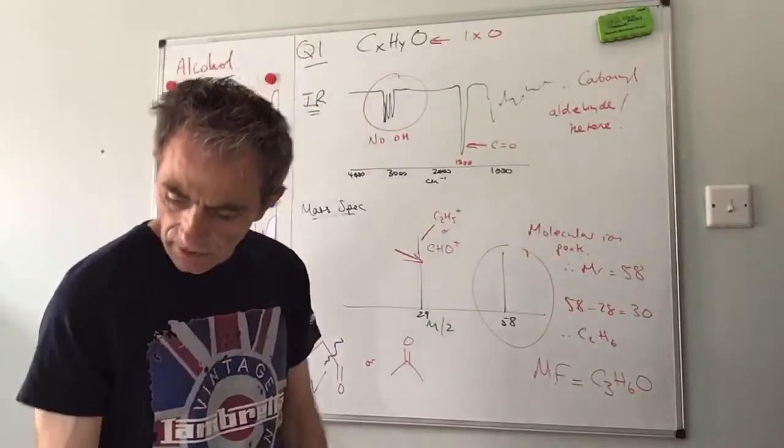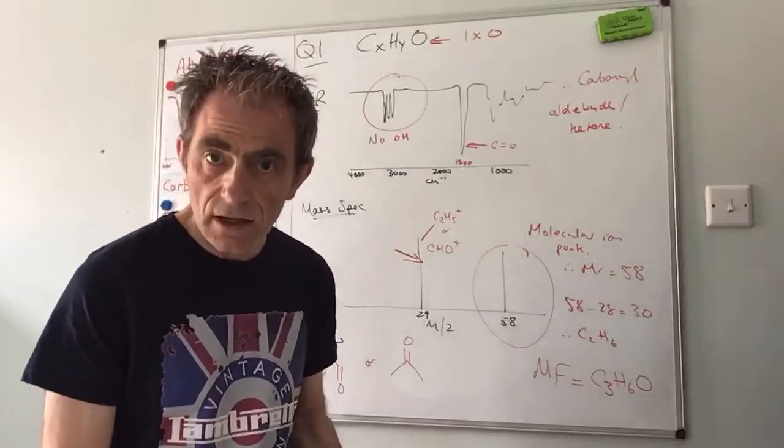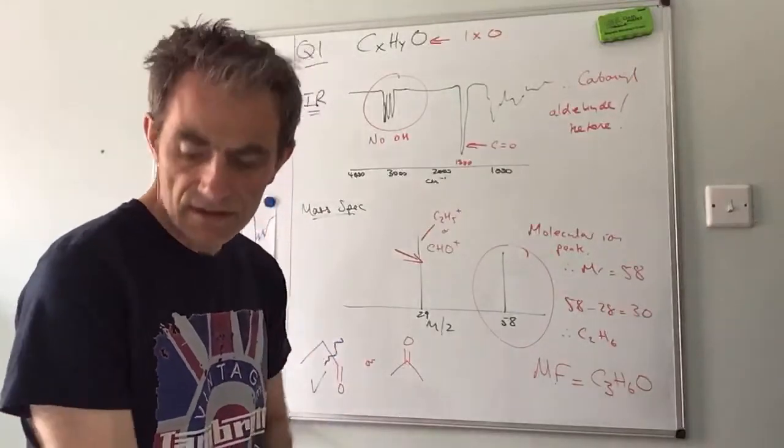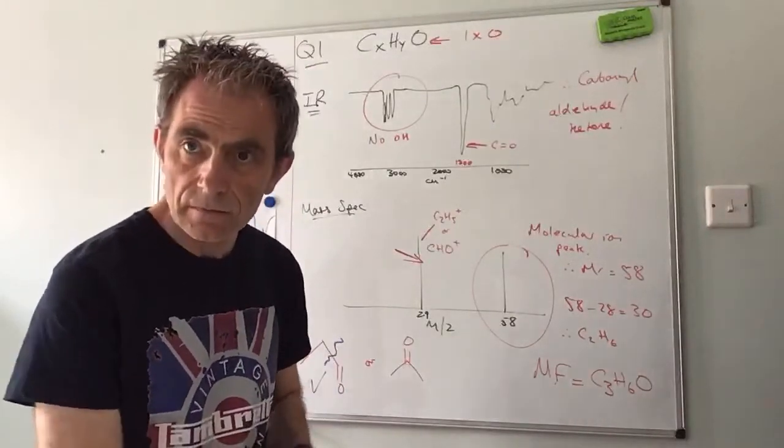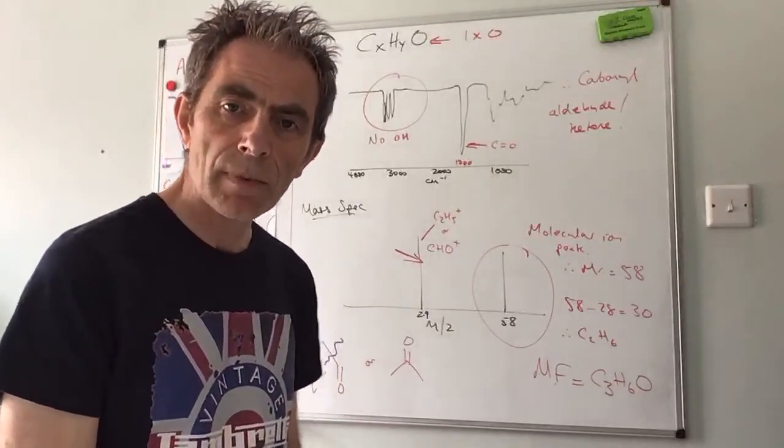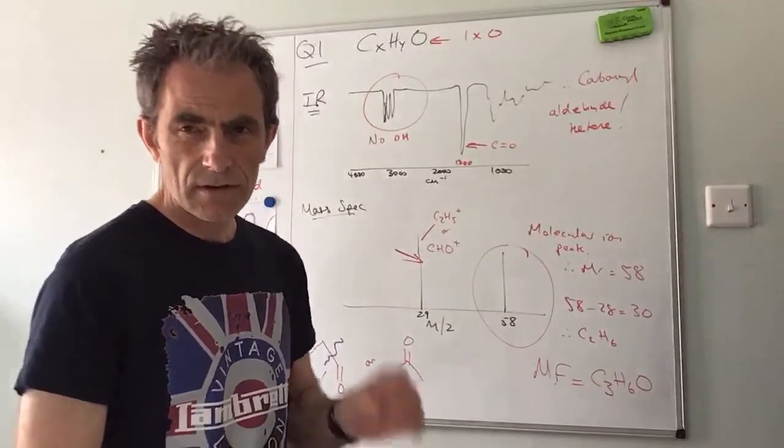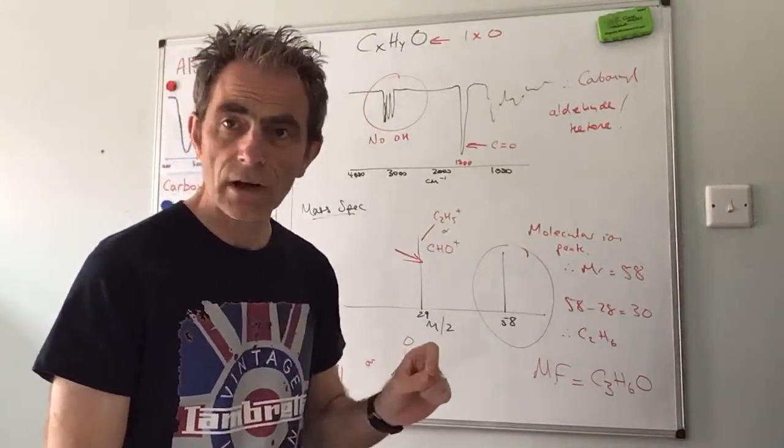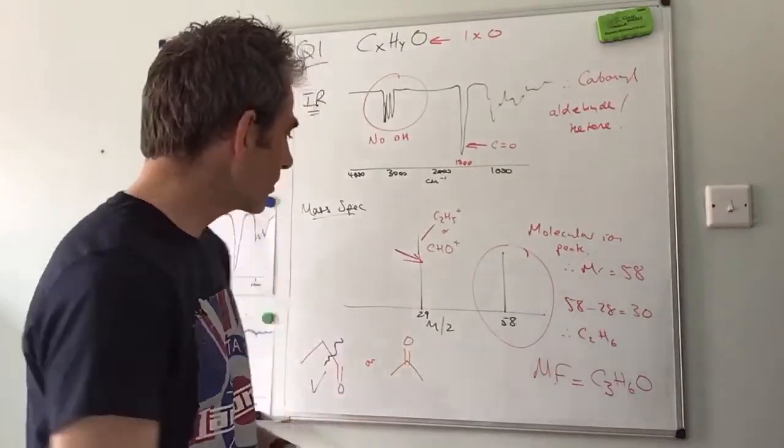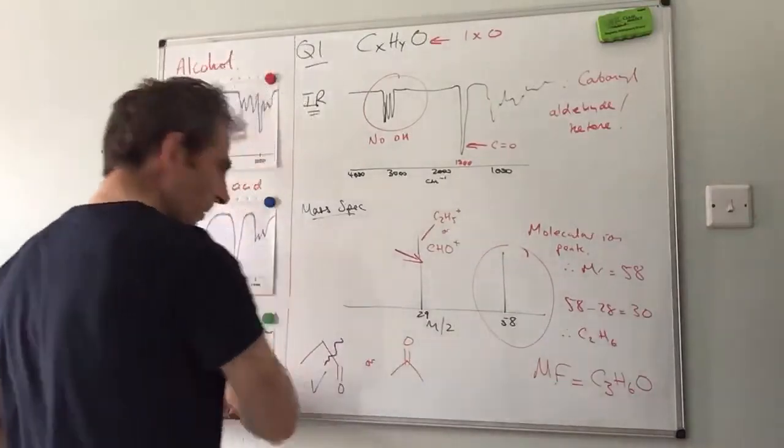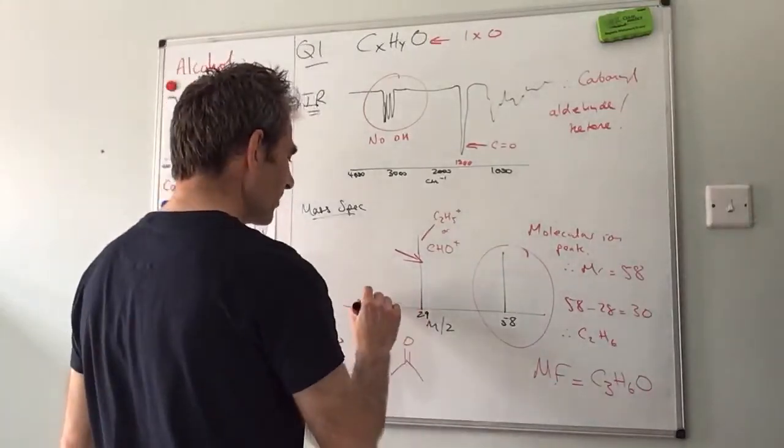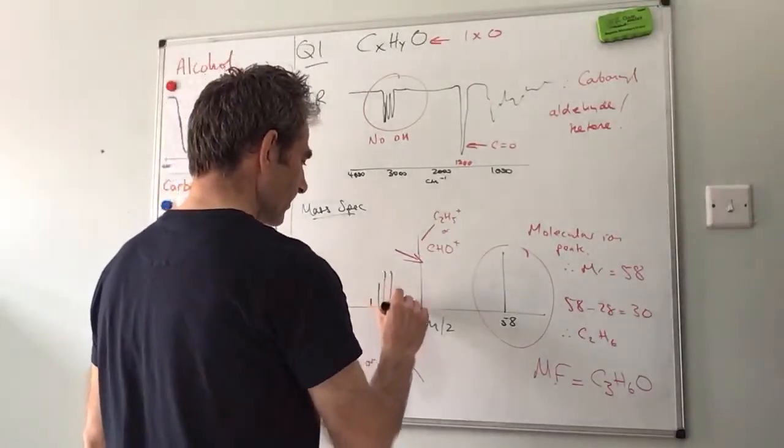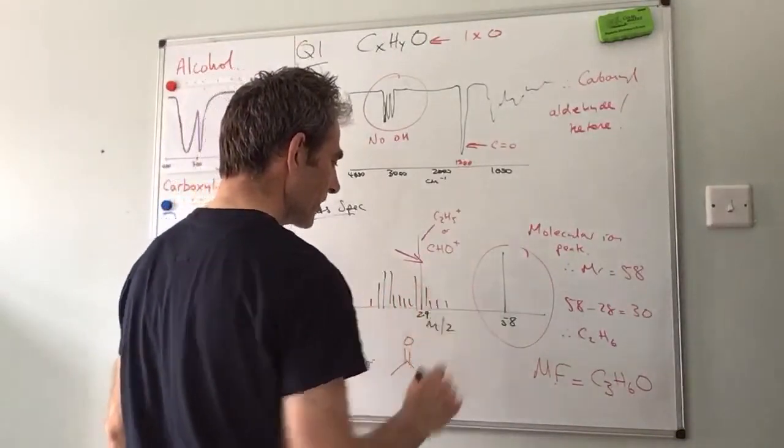The next part of the question says how could the mass spectrum be used to identify the compound. So there's a tiny section in the notes pack, it's literally one line. Basically the fragmentations - if I draw some more peaks on here now - let's put a couple of them up there.